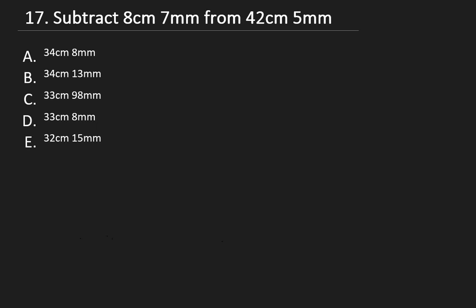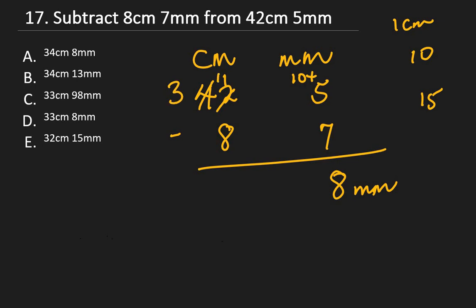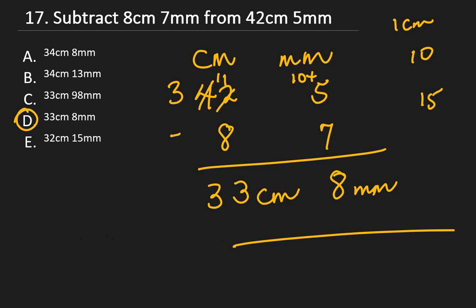Question 17: Subtract 8 cm 7 mm from 42 cm 5 mm. Setting up: 42 cm 5 mm minus 8 cm 7 mm. Since 5 mm minus 7 mm can't work, borrow 1 cm (= 10 mm) from 42, making it 41 cm and 15 mm. 15 − 7 = 8 mm. Then 41 − 8 = 33 cm, borrowing as needed. The answer is 33 cm 8 mm, option D.